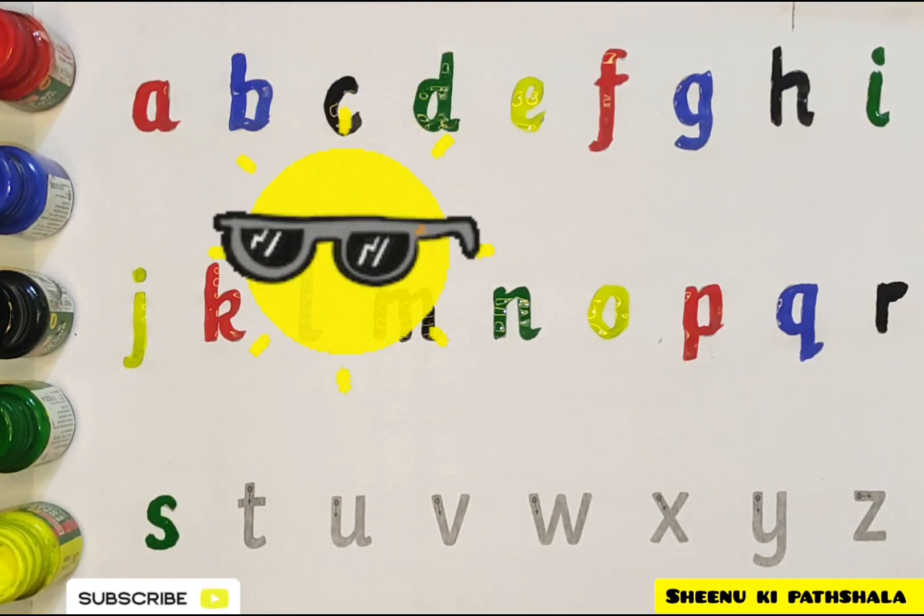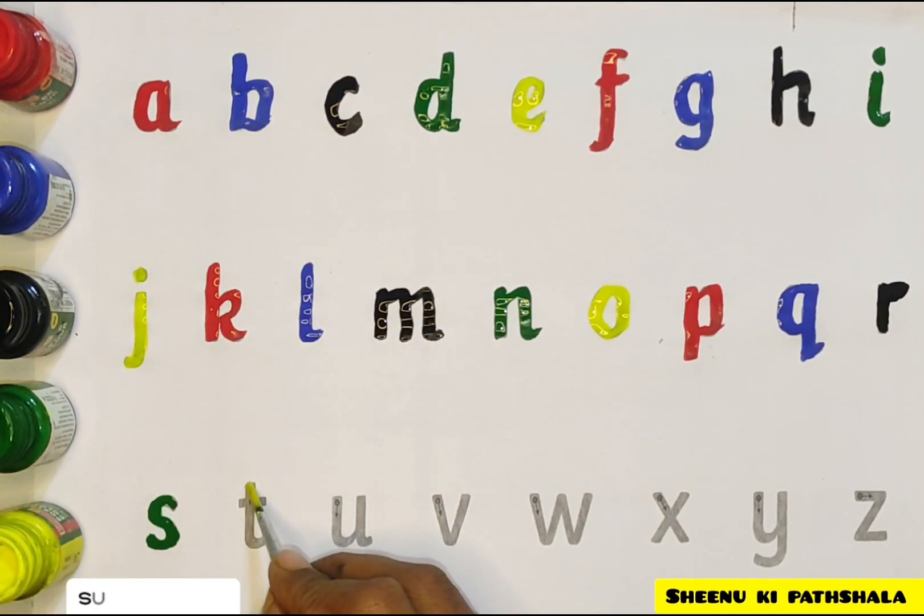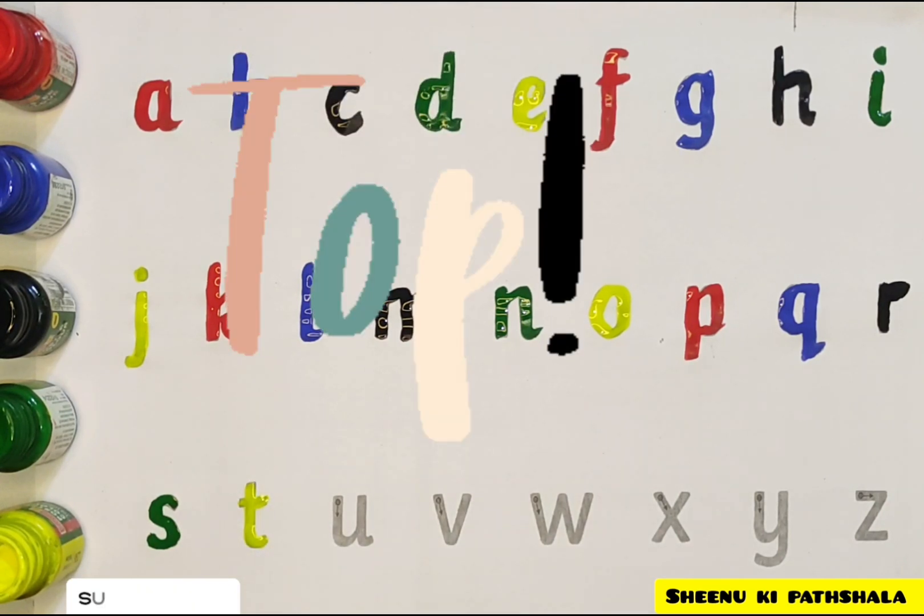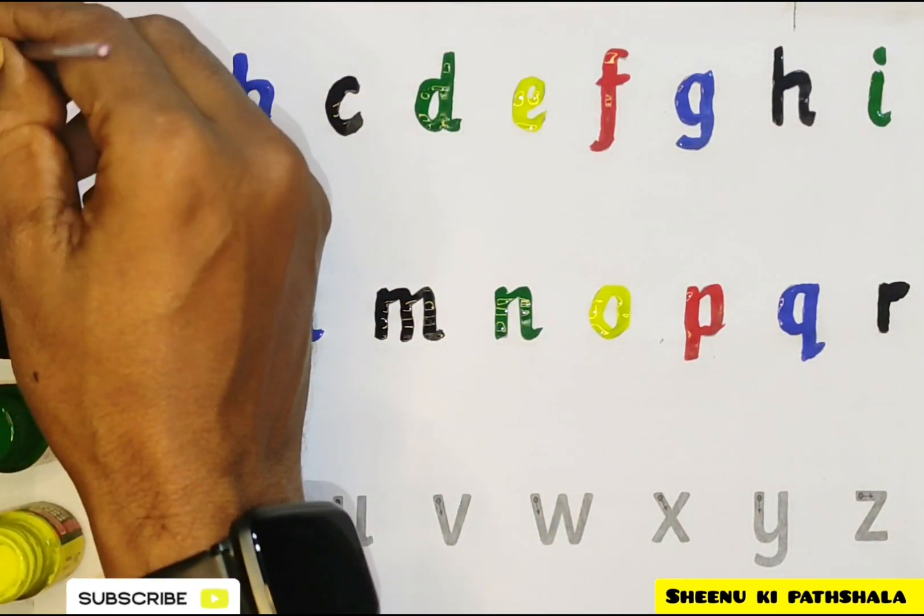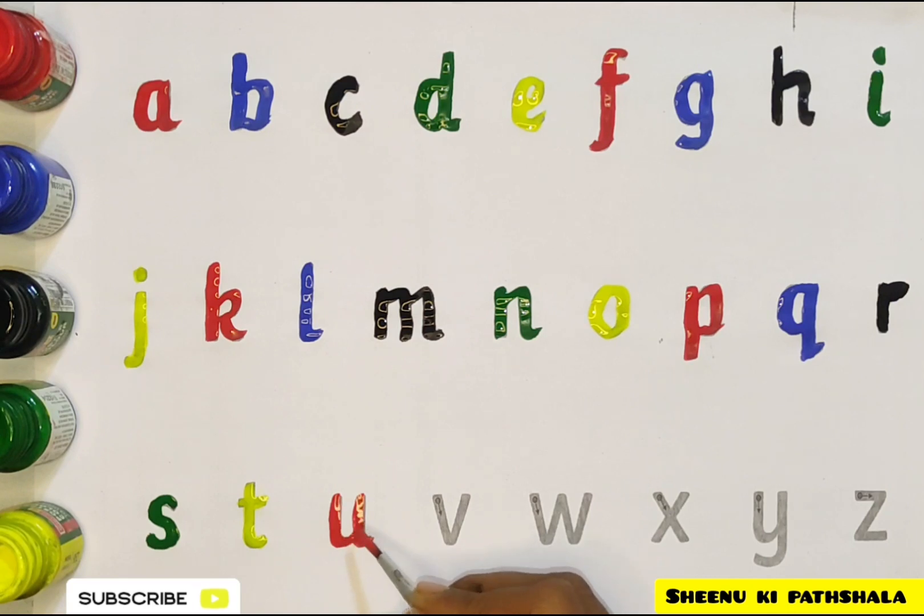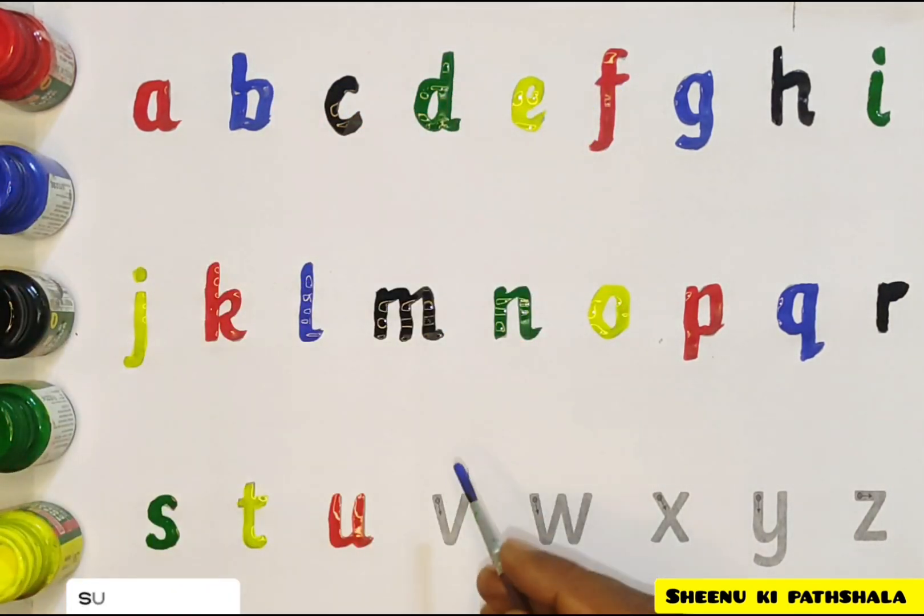Yellow color. T for top, red color. U for umbrella, blue color. V for van.